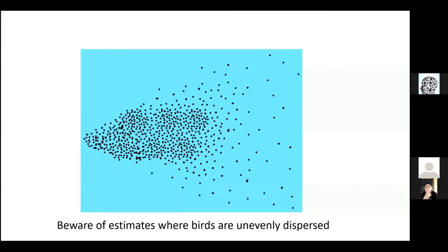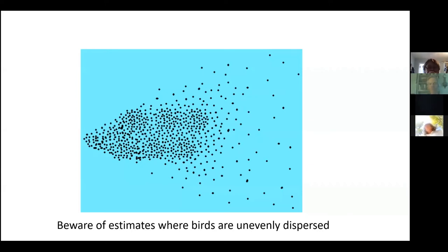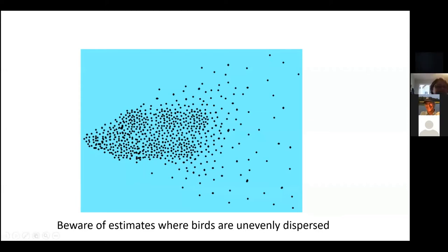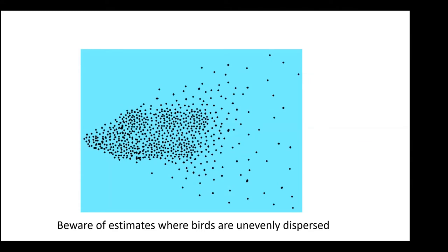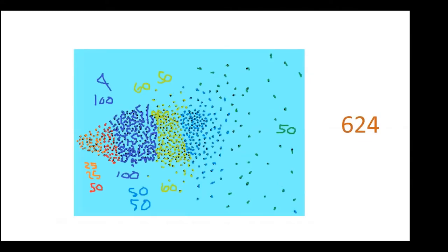Birds are not always evenly dispersed — they might be clumped up. There are 624 dots in this image, and you can see higher densities at the front edge versus the further back edge. The red circle shows 100 birds, and the blue circle also shows 100 birds — so you can see how different 100 birds looks at different portions of this block with different densities.